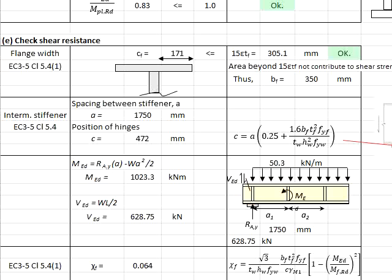To solve these questions, first we need to determine the C flank. It is to be checked against 15 times epsilon times the thickness of the flank. As beyond that, the flank is considered does not contribute to any shear resistance of the members. In this case, the C flank is equal to 171, which is less than the limit of 15 epsilon t. Therefore, the entire flank can be used to contribute to the shear resistance of the member.